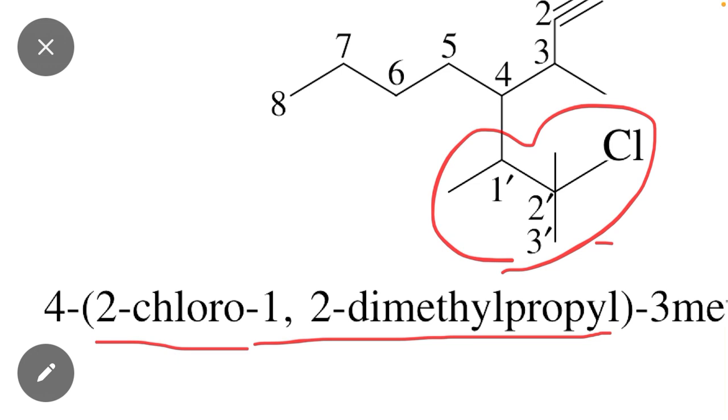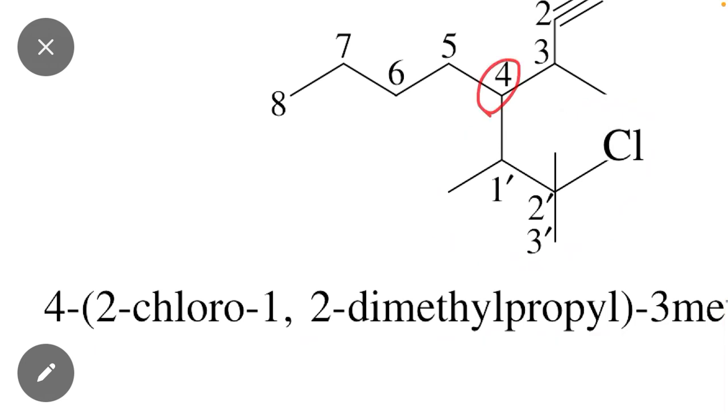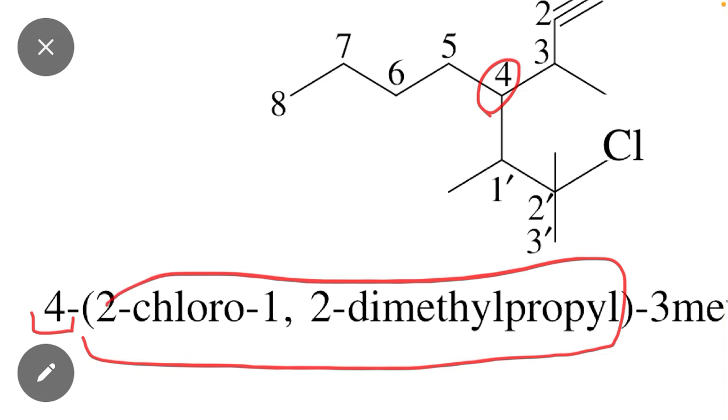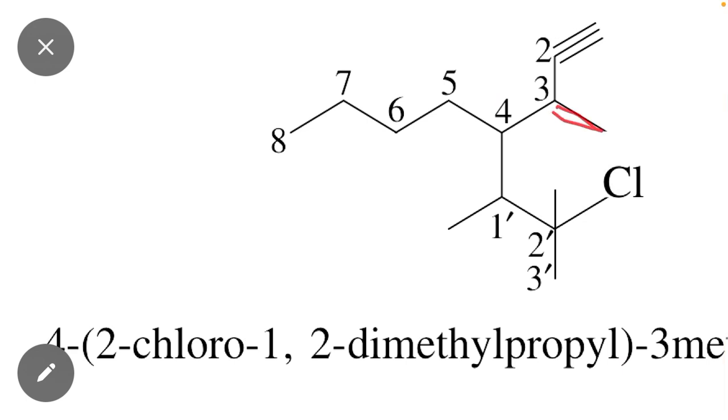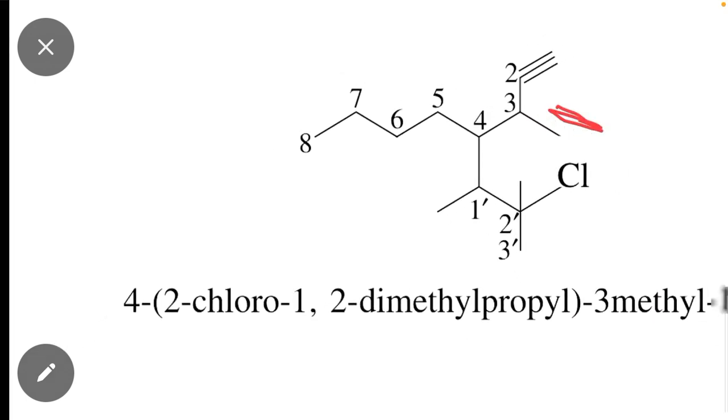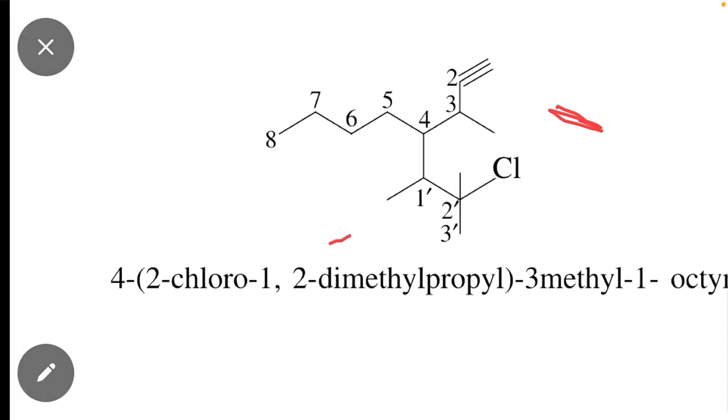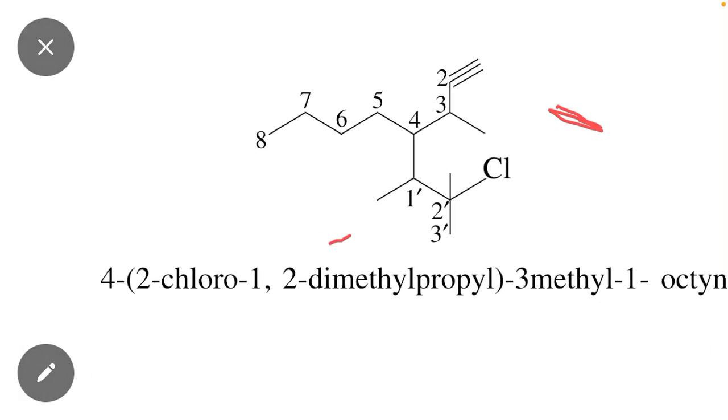This substituent is present at position 4, so we first write 4, then bracket and write the name of this substituent. After that, at position 3 this line shows a methyl group - 3-methyl. And 1-octyne, as the triple bond is present at position 1.